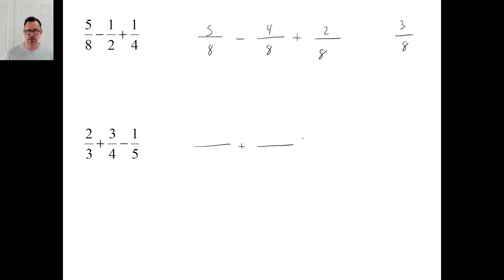Okie doke. Let's try D. 3 times 4 times 5, well, you know, if you didn't know any better, you'd have to just multiply them all. The answer is, it does happen to be 60. So 60 all the way across. 2 thirds of 60 is 40. 3 fourths of 60 is 45. A fifth of 60 is 12. 40 plus 45 is 85, minus 12 is 73 sixtieths, or 1 and 13 sixtieths.